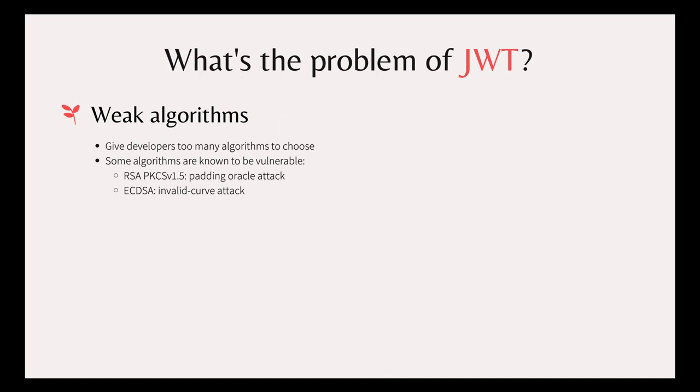But it's not the worst. JSON Web Token makes token forgeries so trivial that if you are not careful in your implementation, or if you choose a poorly implemented library for your project, your system will easily become a vulnerable target. One bad thing about JWT is that it includes the signing algorithm in the token header. Because of this, we have seen in the past an attacker can just set the algorithm header to "none" to bypass the signature verification process. Of course, this issue has been identified and fixed in many libraries, but it's something you should carefully check when choosing a community-developed library for your project.